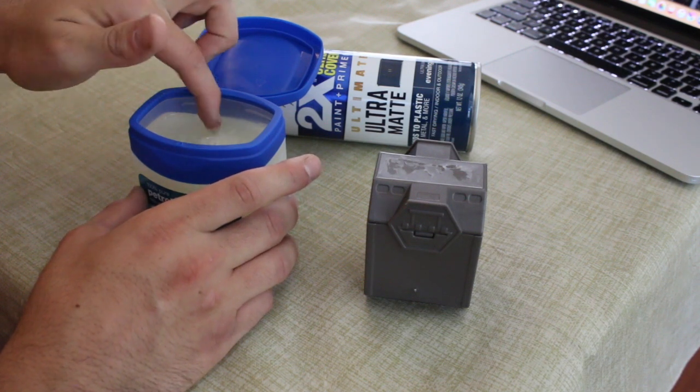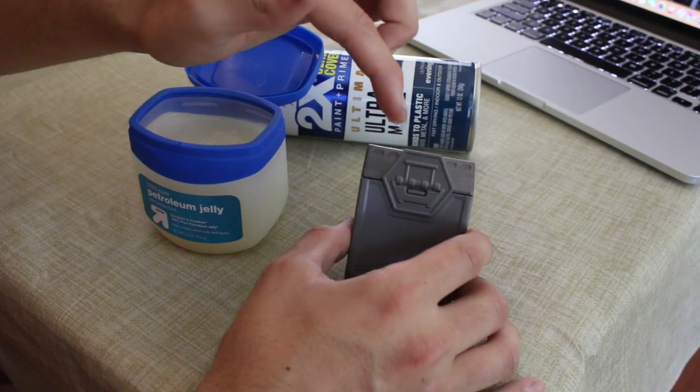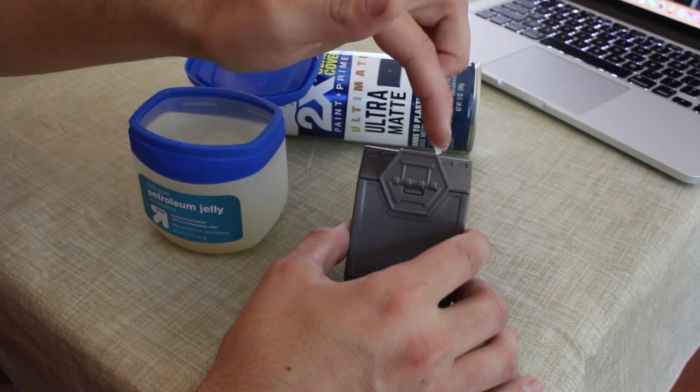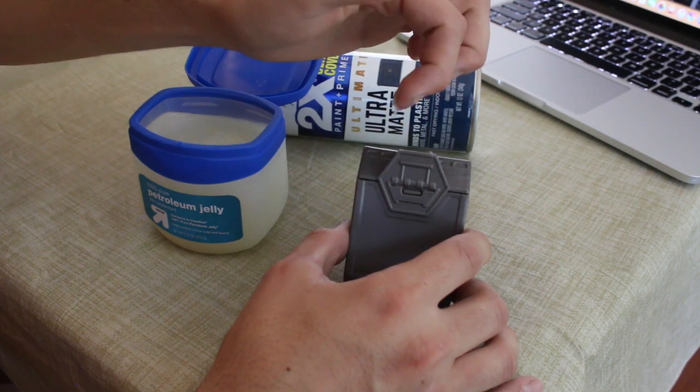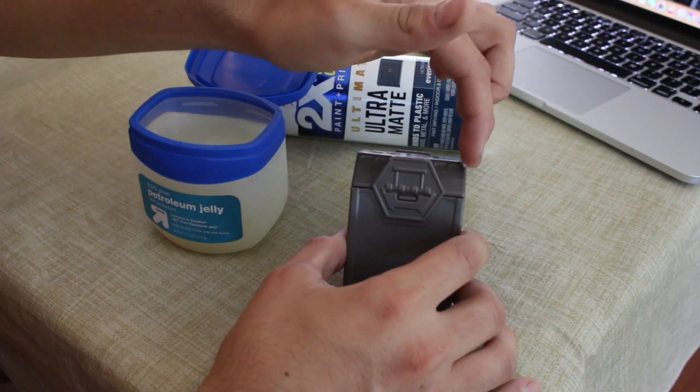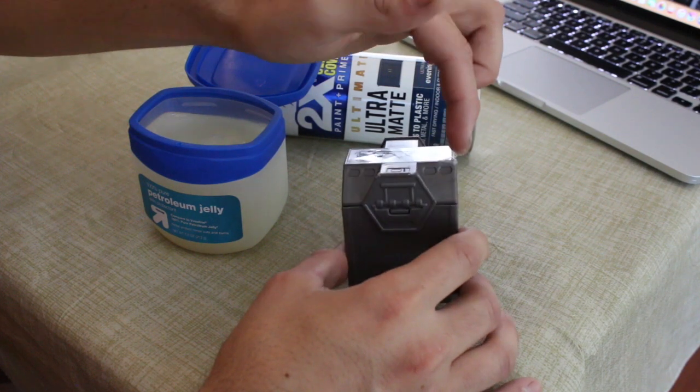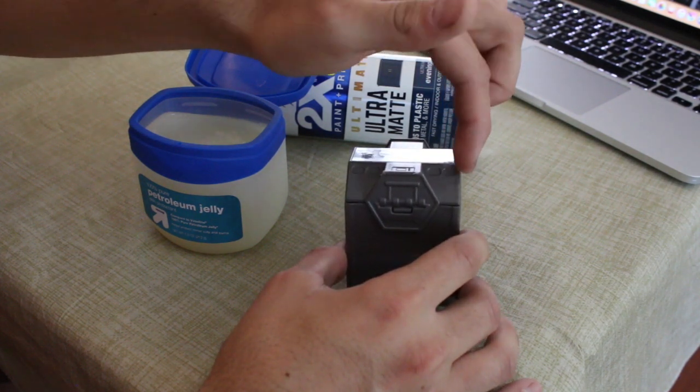So anything that might have wear or chips, you're going to want to put some petroleum jelly on there. So I think you're going to want to do like kind of chunky. So we're going to put it on the corners, all the corners would have chips.